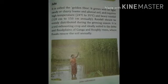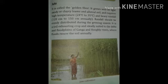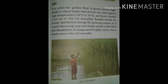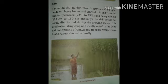Jute is called golden fiber. It is grown well on light sandy or clay loams and alluvial soil. It requires high temperature of 24 to 35 degrees Celsius and heavy rainfall of 120 to 150 centimeters annually. Rainfall should be evenly distributed during the growing season. It is a soil-exhausting crop, ideally suited to the delta and flood plains of the Ganga and Hooghly rivers, where floods renew the soil annually.